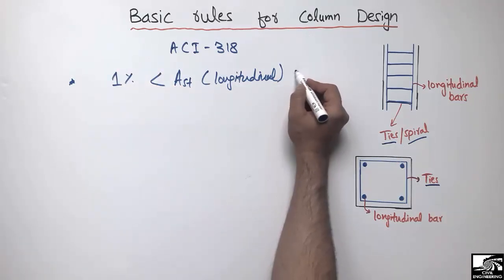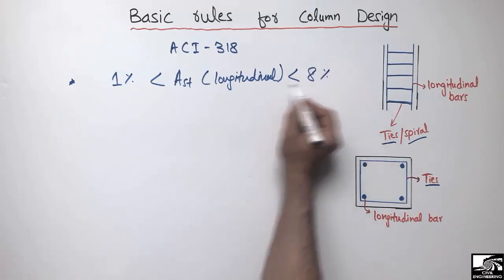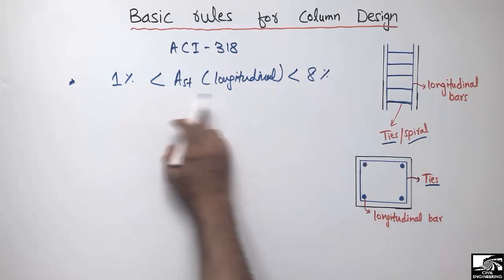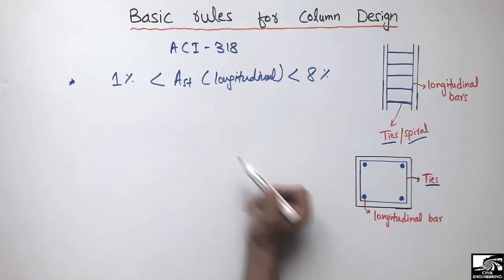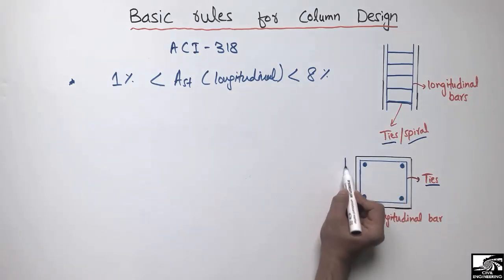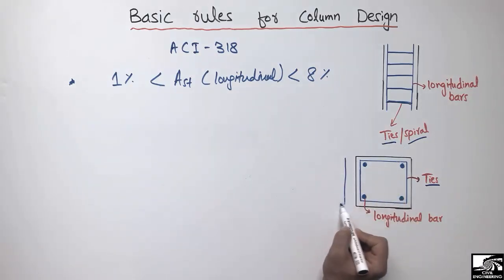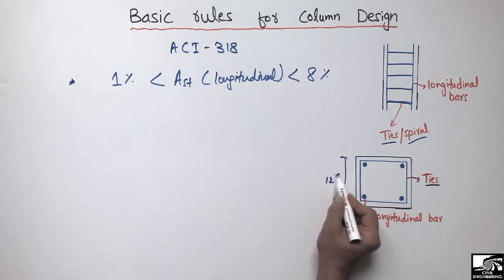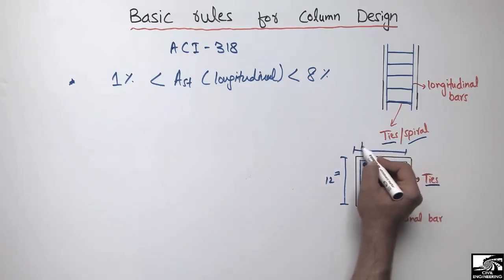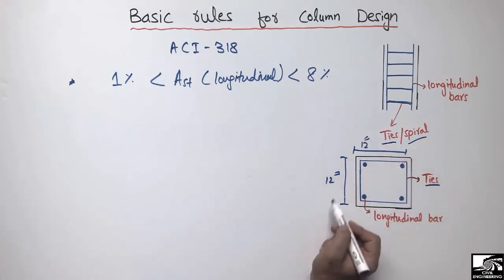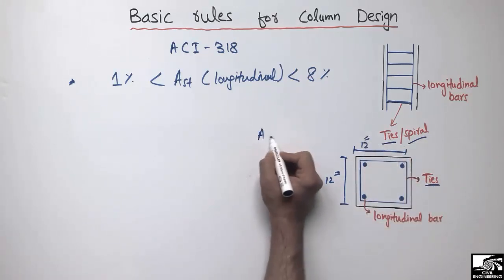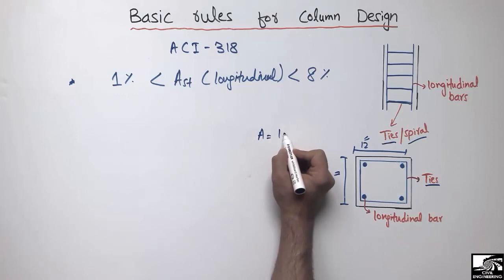To explain the first rule in more detail, I will take an example of this column. Let's suppose the dimension of this column is 12 inches by 12 inches, so it is a square type of column.